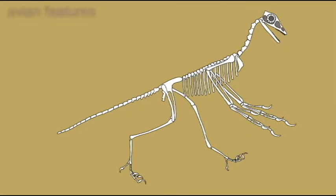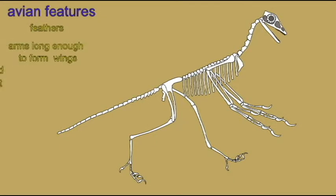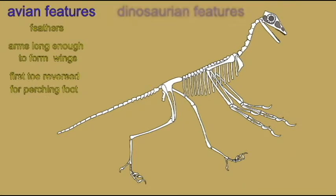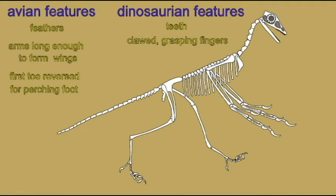But there are also dinosaurian features which modern birds typically lack, such as teeth, clawed grasping fingers, a long reptilian tail, and the absence of a keeled sternum for flight muscles.